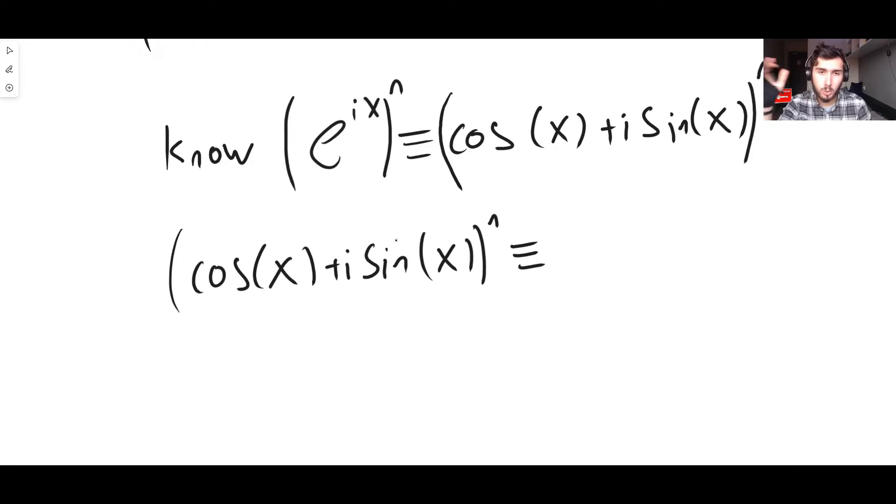When you have something that's got an exponent in brackets, and then it's raised to another exponent, those two indices, those exponents multiply together. So all we get is e to the i n x, just like that.